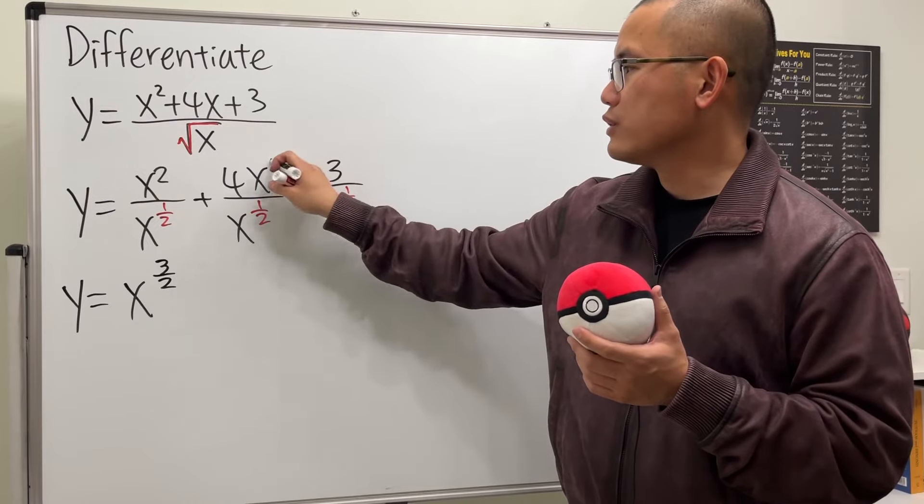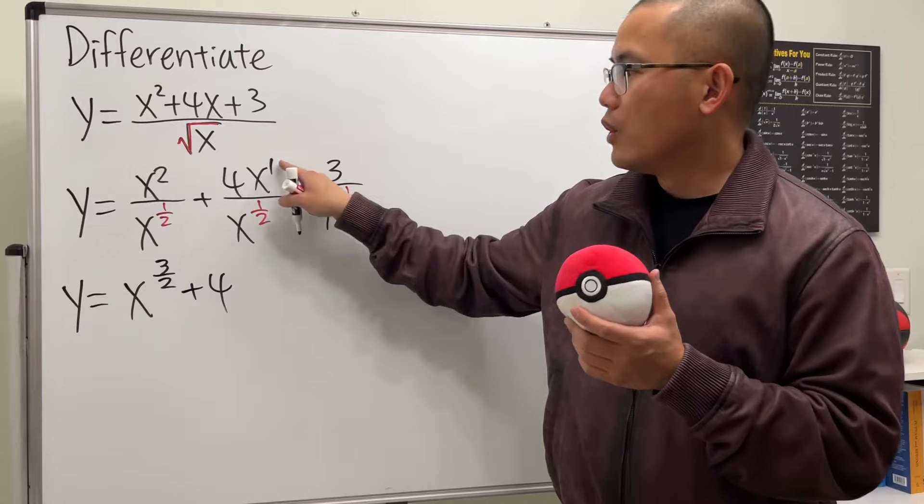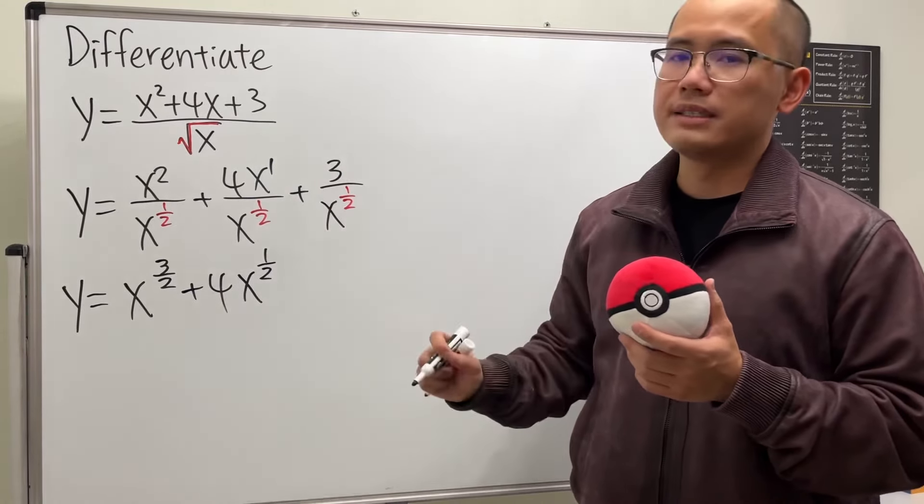Next, this is the same as x to the 1st power. We have the 4, so let me write it as plus 4. 1 minus 1 half is 1 half. So we have x to the 1 half power. And again, that's positive.